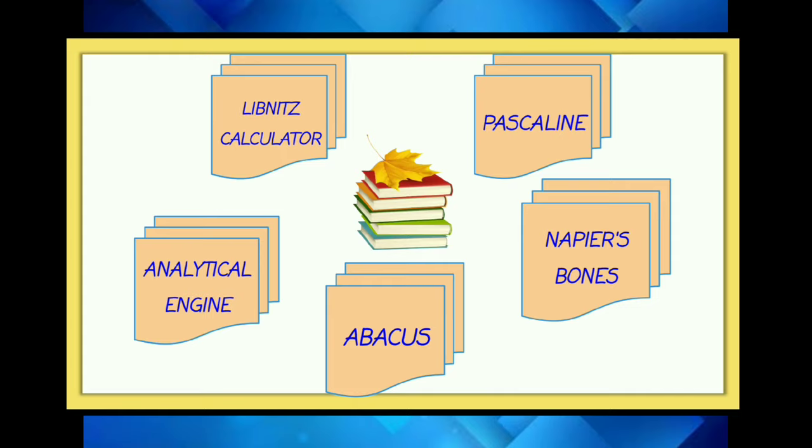It started with some basic calculating devices. The first device was the Abacus, which was developed by the Chinese. The second device is Napier's Bones, invented by John Napier in 1617. The next device is the Pascaline, developed by Blaise Pascal in 1642.